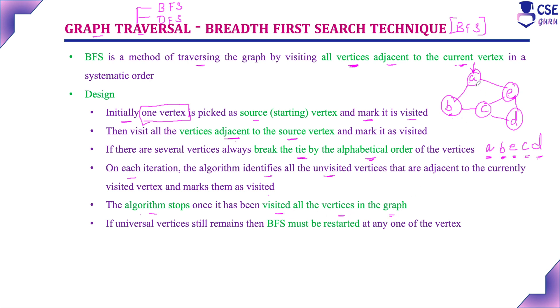So for this graph the traversal order is A, B, E, C, and D. In this systematic order we have visited all the vertices. The algorithm stops once it has visited all the vertices.